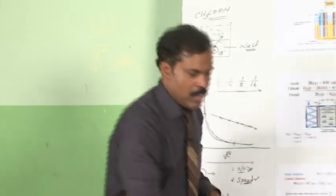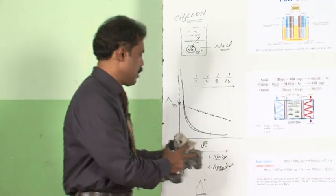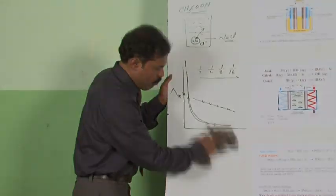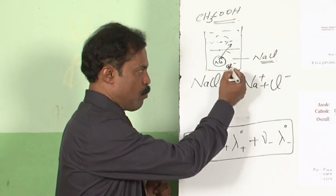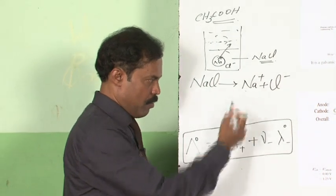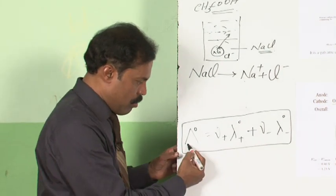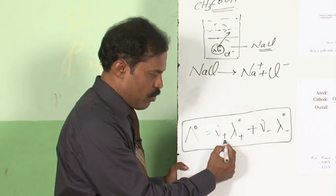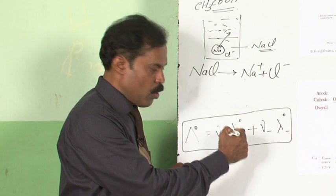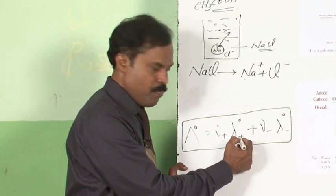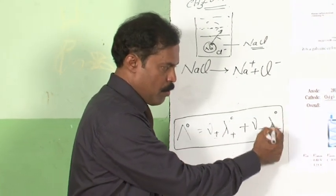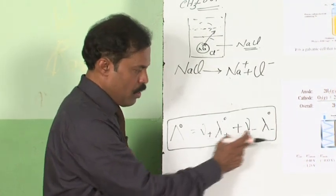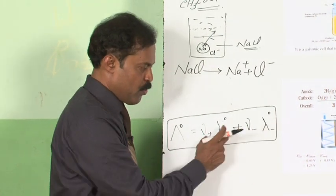There is a way out. A scientist called Kohlrausch studied about lambda infinity values and realized that the lambda infinity of a substance is the sum of the contributions of each ion — that is, the number of each type of ion multiplied by the contribution of that ion.